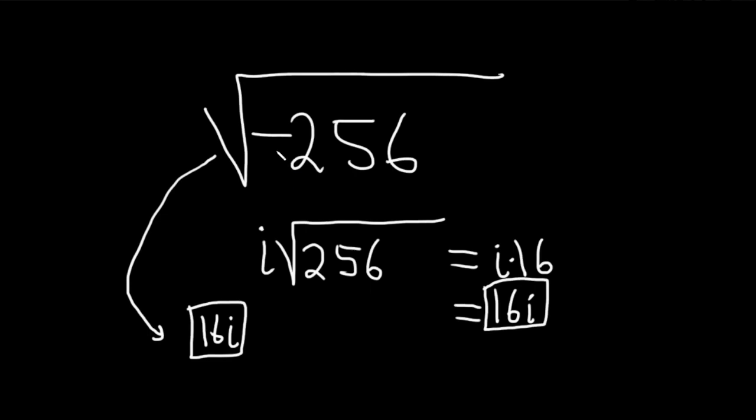So again, you look at it, you say, okay, there's going to be an i because there's a negative in the square root. And the square root of 256 is 16. Therefore, the answer is 16i.